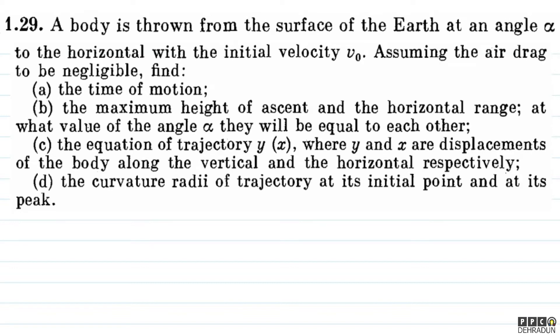The question says: a body is thrown from the surface of the earth at an angle alpha to the horizontal with the initial velocity v0. Assuming the air drag to be negligible, find — we'll look at each part of the time of motion. The first part is time of flight or time of motion.